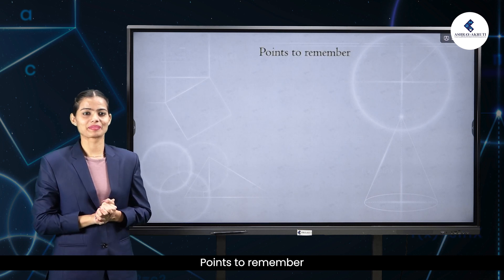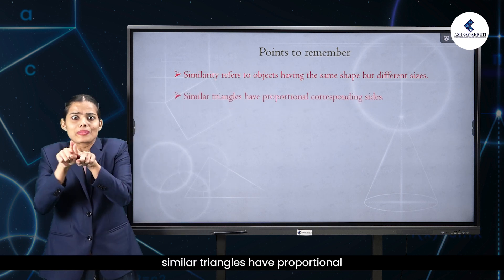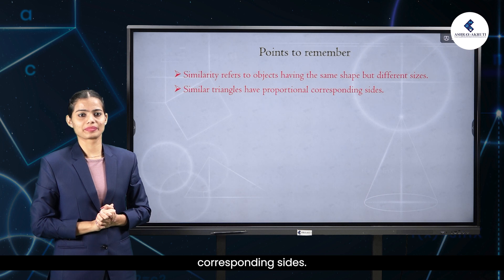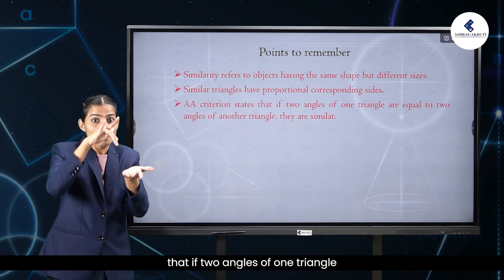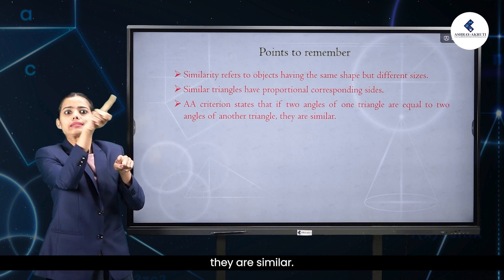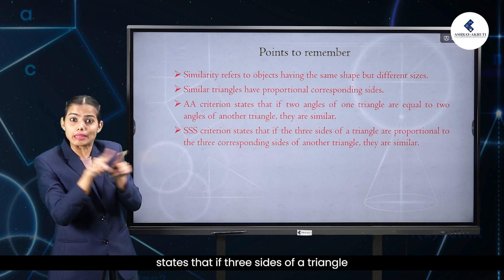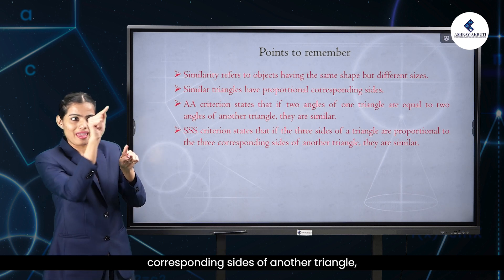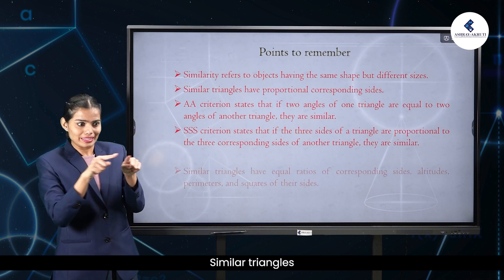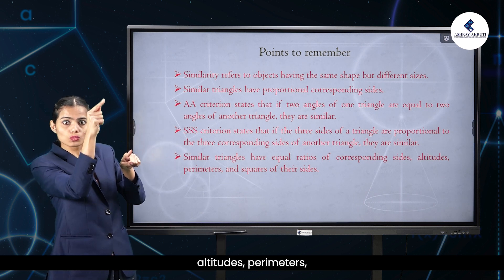Points to remember: Similarity refers to objects having the same shape but different sizes. Similar triangles have proportional corresponding sides. The angle-angle criterion states that if two angles of one triangle are equal to two angles of another triangle, they are similar. The side-side-side criterion states that if the three sides of a triangle are proportional to the three corresponding sides of another triangle, they are similar. Similar triangles have equal ratios of corresponding sides, altitudes, perimeters and squares of their sides.